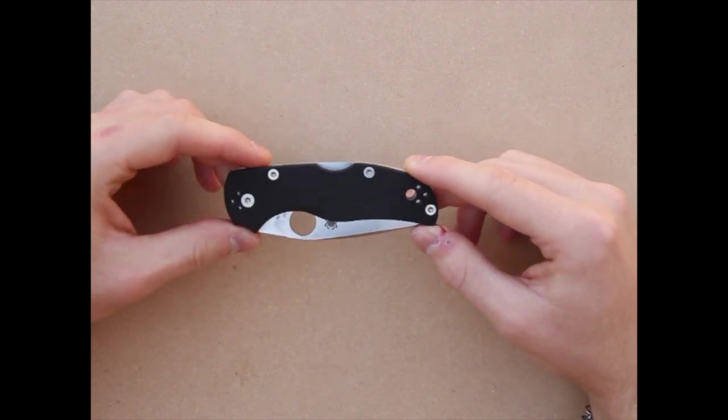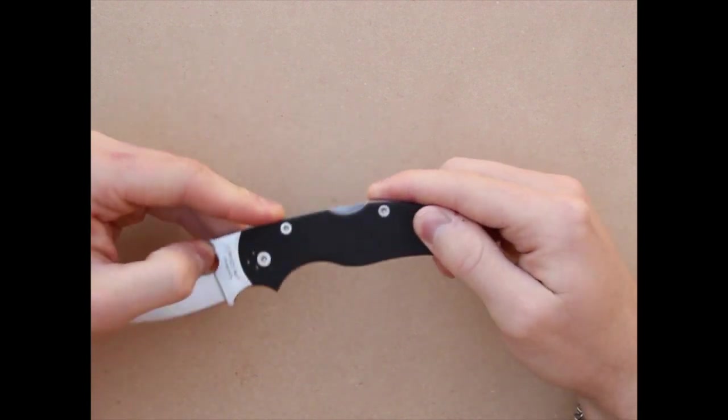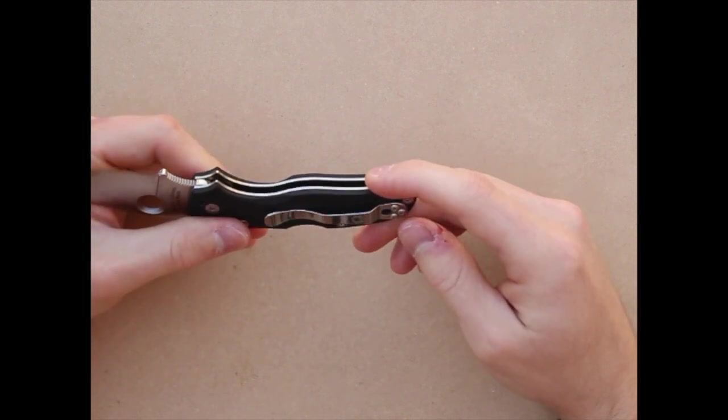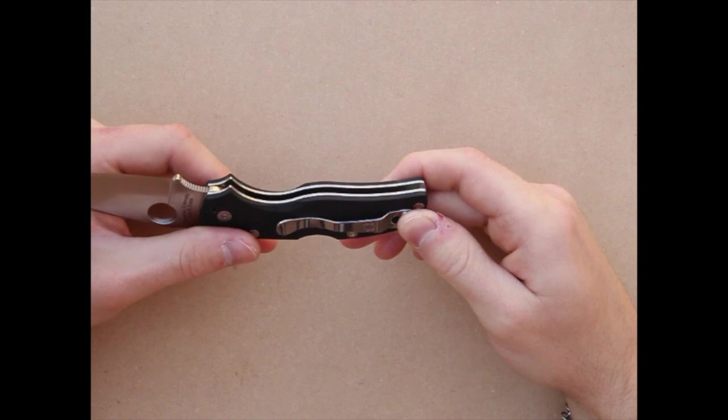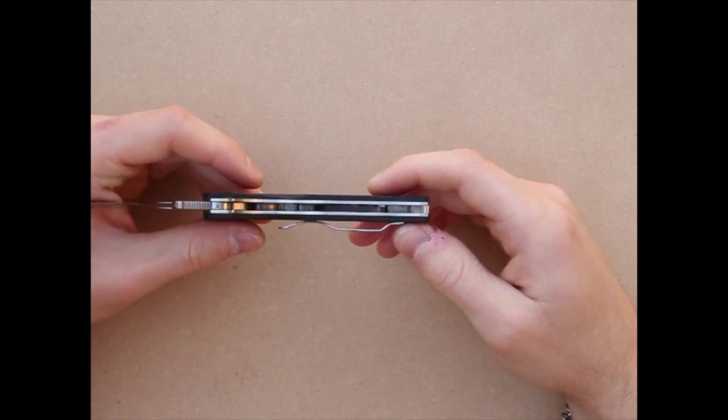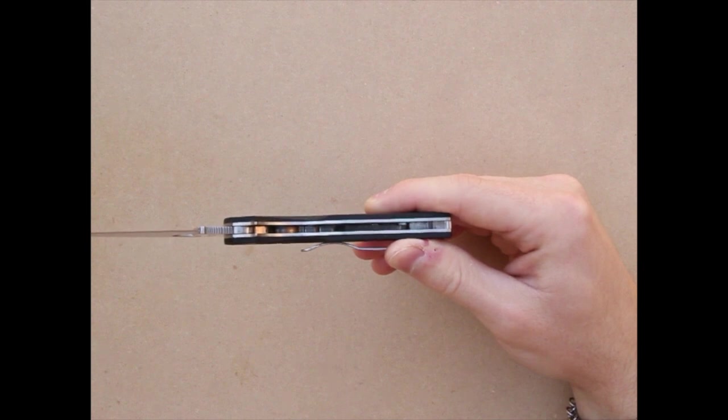We'll start with the handle construction. Handles are made out of G10. Nice texture to it, not too grippy. Full stainless steel liners that are heavily skeletonized. Despite that, this does come in at a hefty 4.5 ounces, which is a little heavy for a knife this size.